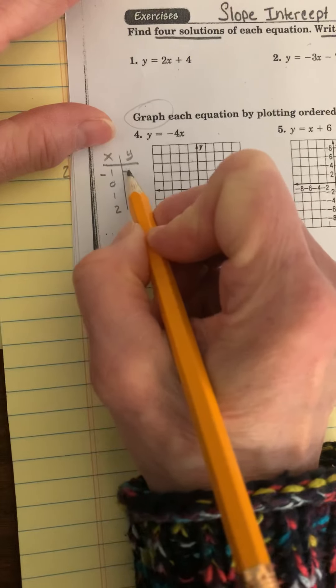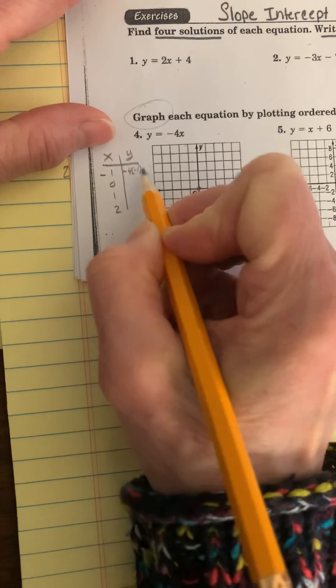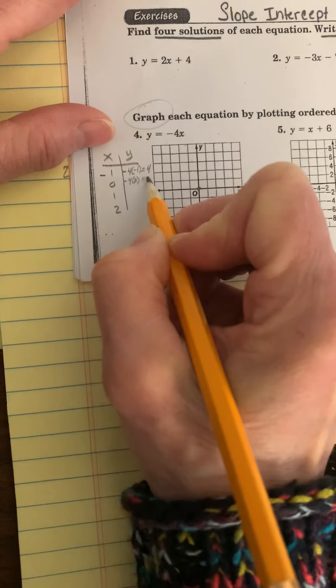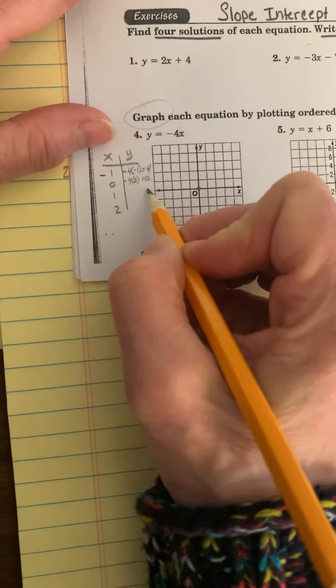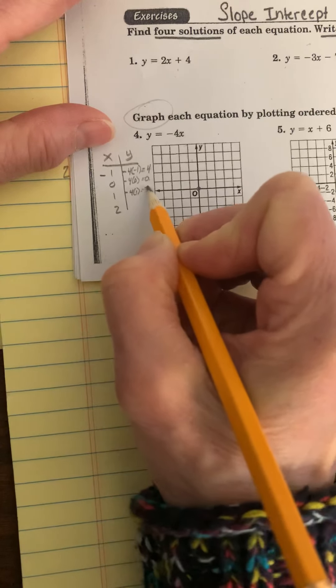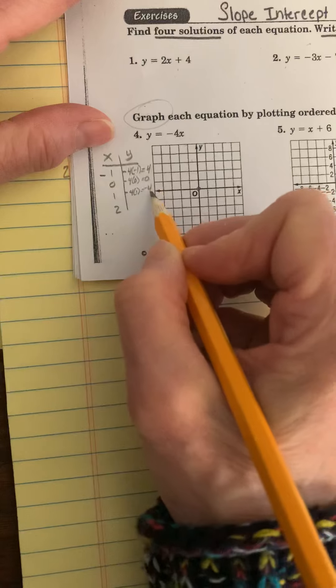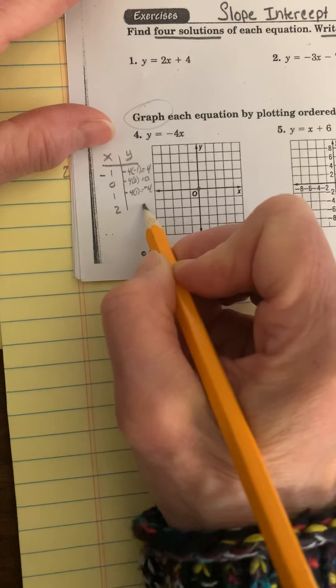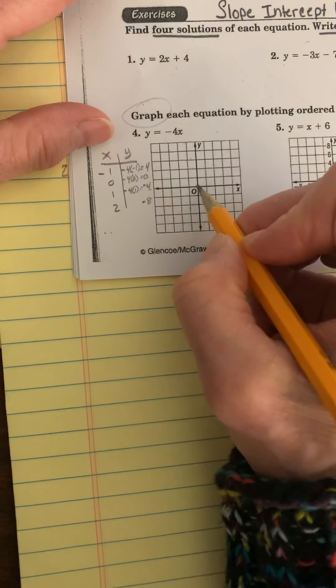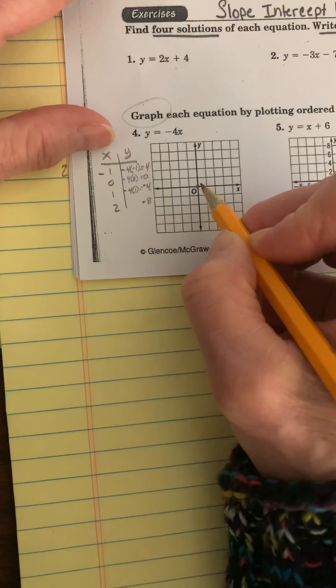So you do negative 4 times negative 1, which is equal to 4. Then negative 4 times 0, which is equal to 0. What are you going to notice? Is it going down by 4? Negative 4 times 1 is equal to negative 4. So if you notice, it's going down by 4 each time. So that one would be negative 8. You know you did it right if your graph creates a linear line. In this case, it's going to be a line that's going down.